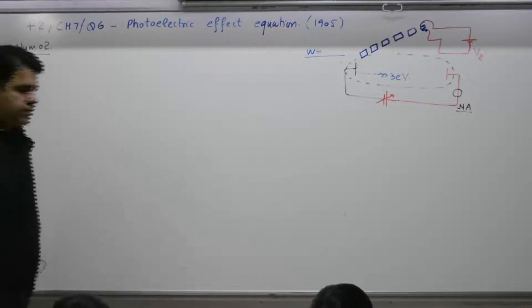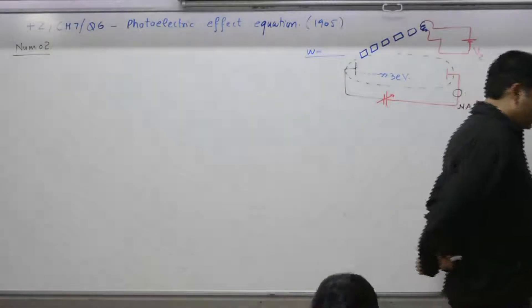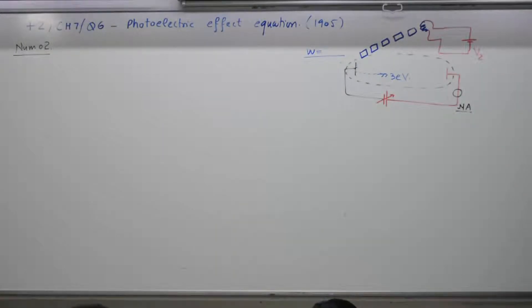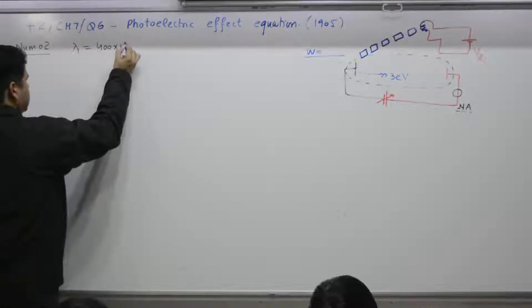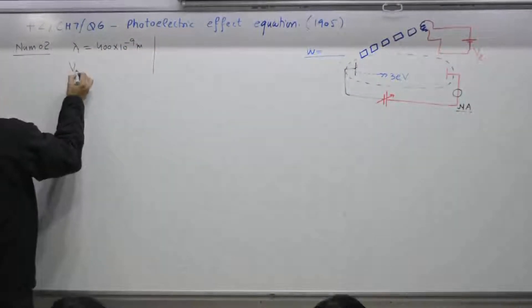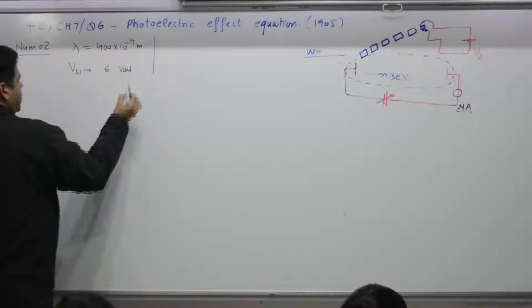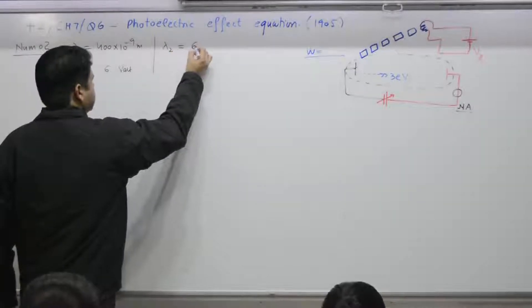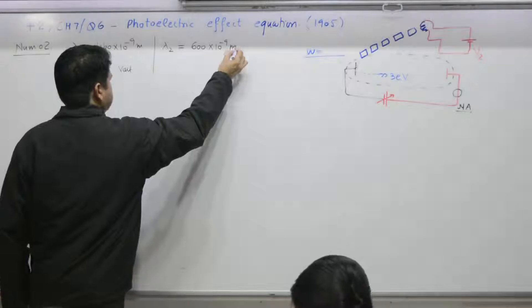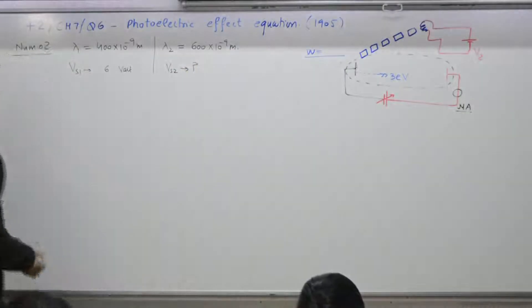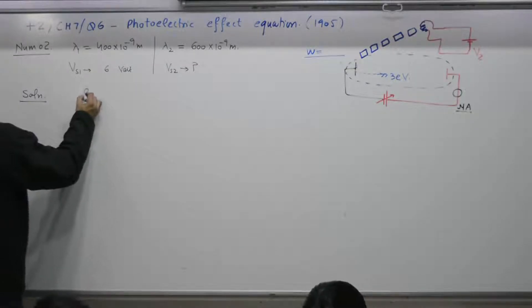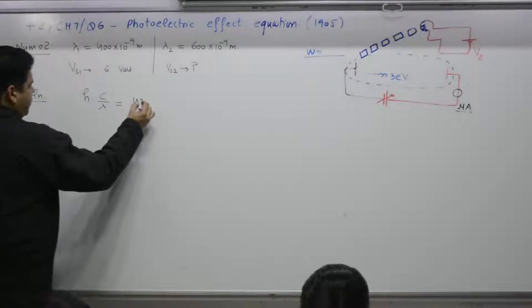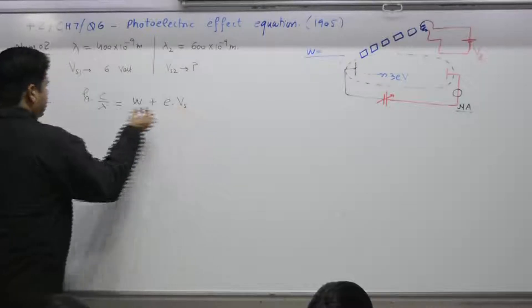What is given and what is required? First experiment: wavelength λ₁ = 400 nm = 400×10⁻⁹ m, stopping potential V_s1 = 6 V. Second experiment: λ₂ = 600 nm, stopping potential V_s2 is to be found. Write the equation — all numericals 1 to 7 deal with Einstein's equation: h·c/λ = work function + e·V_stopping.